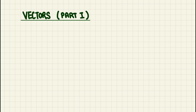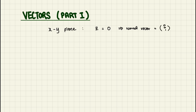First thing to take note of in vectors is the various kinds of planes. The XY plane: the z-value is zero, and the normal vector is (0, 0, 1). This is just a summary of planes — it's good to know because questions may give you the YZ plane or XZ plane and ask you to find the normal vector, or you'll need to infer what the normal vector is.